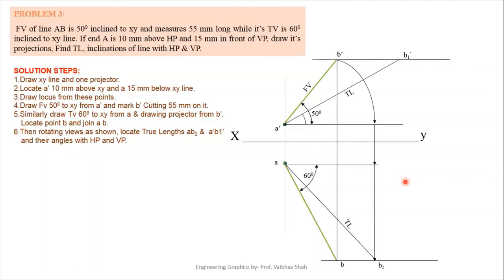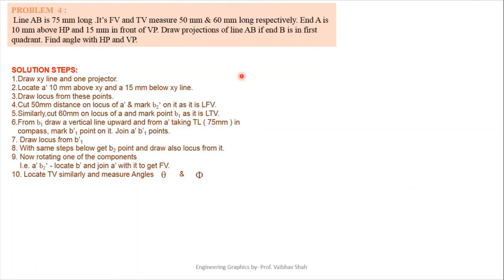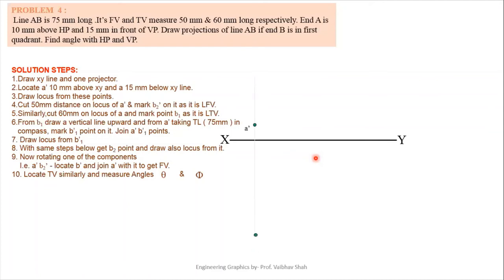Problem 4: Line AB is 75 mm long. Its front view measures 50 mm and top view measures 60 mm long. End point A is 10 mm above HP and 15 mm in front of VP. End point B is in the first quadrant. Draw projections and find angles with HP and VP. True length = 75 mm, front view = 50 mm, top view = 60 mm. Solve projection of point first, then draw XY line and locate A' and A.